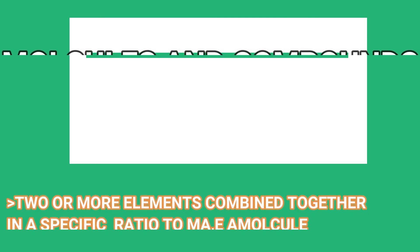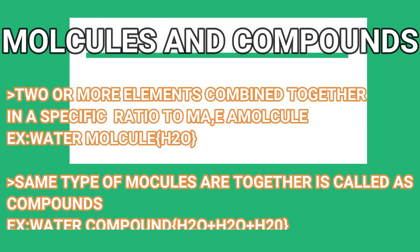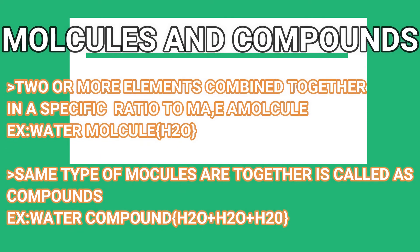Our next topic is molecules and compounds. Two or more elements combined together in a specific ratio make a molecule. For example, a water molecule consists of one oxygen atom and two hydrogen atoms. The same type of molecules together is called a compound. For example, the water compound is made of lots of water molecules together.